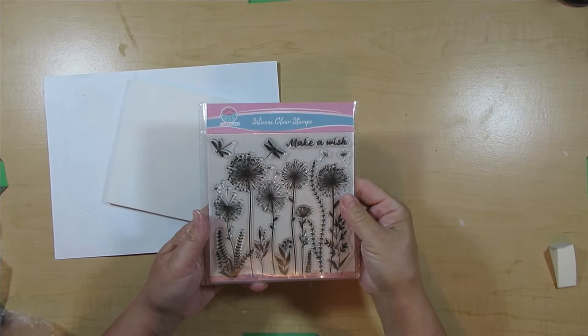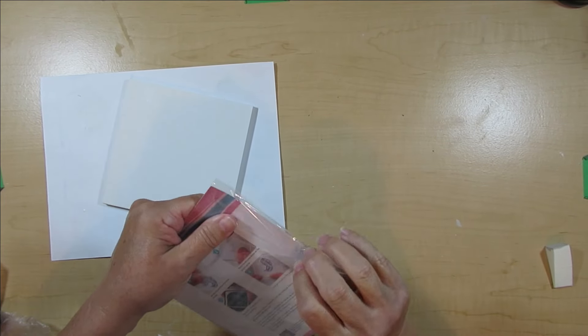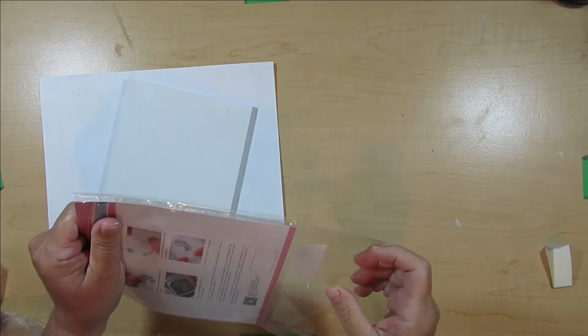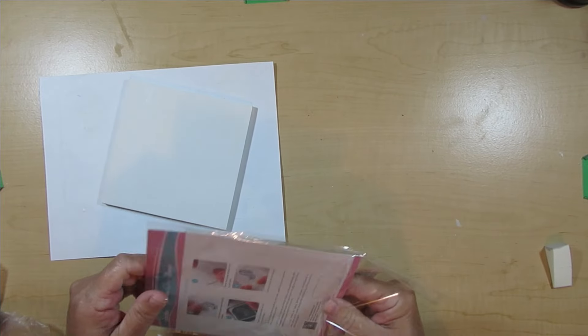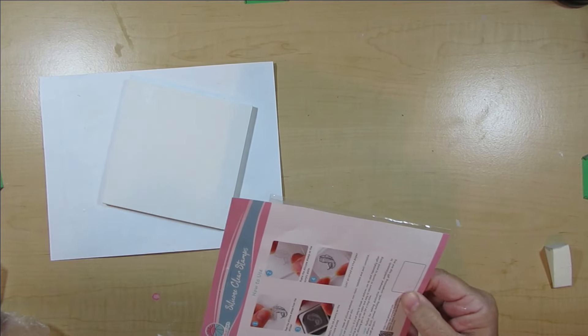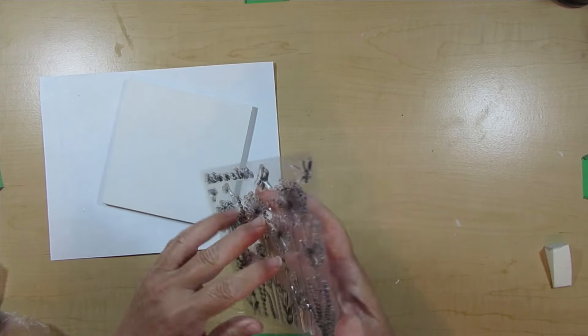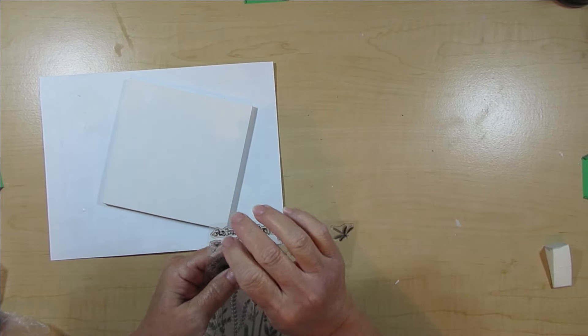These dandelion stamps came from BB Craft. They are so pretty. And you know what? This size fits perfectly on my little panel. So I'm going to be inking this up and I'm going to put it on there exactly how it is.